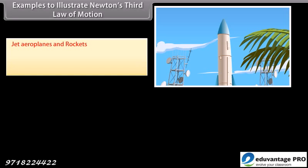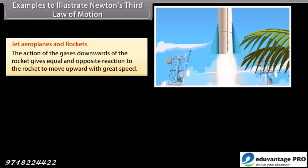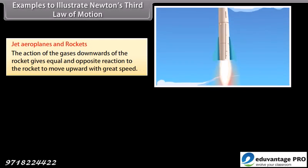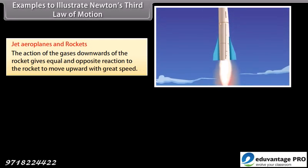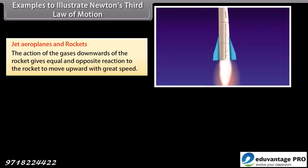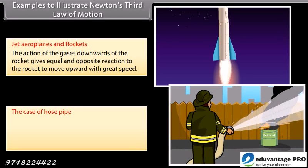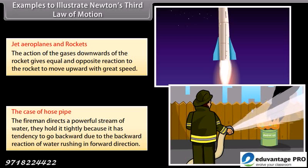Jet airplanes and rockets. The action of the gases downwards of the rocket gives equal and opposite reaction to the rocket to move upward with great speed. The case of hose pipe: the fireman directs a powerful stream of water. They hold it tightly because it has tendency to go backward due to the backward reaction of water rushing in forward direction.